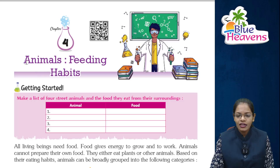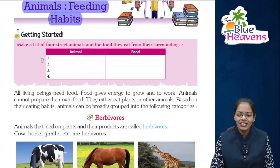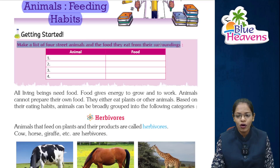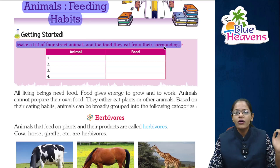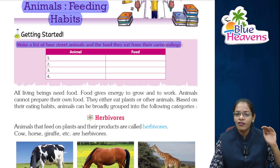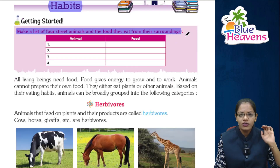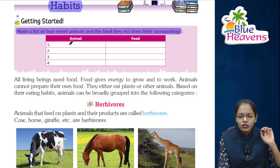Students, let's get a start. Make a list of four street animals and the food they eat from their surroundings. You can observe the street animals and their food items that they eat, and fill it here — names and their food. First is cow: cow eats grass.